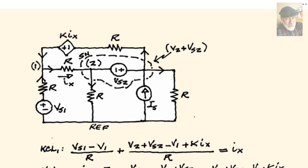KCL 1 currents going in, the one at the bottom. VS1 minus V1 divided by the resistance in that branch, R. Plus the current at the top, which is the voltage of the origin. V2 plus VS2, the voltage on the far side.